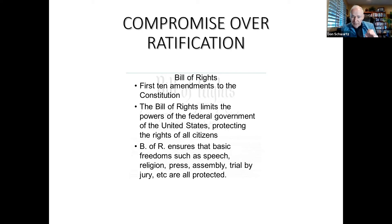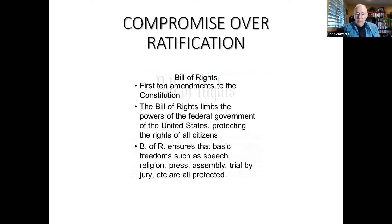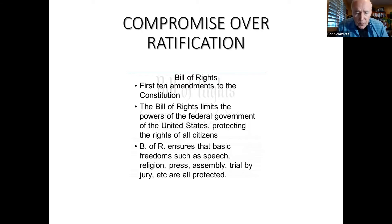The body of the Constitution itself represents power given to the federal government. The Bill of Rights, on the other hand, represents protection against the power of the federal government — freedoms such as freedom of speech, religion, press, assembly, and trial by jury.